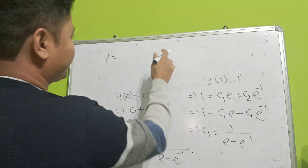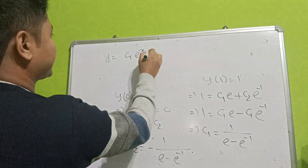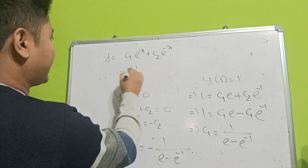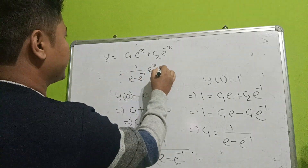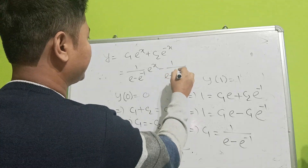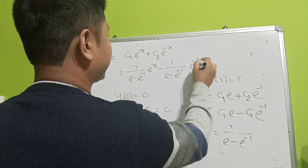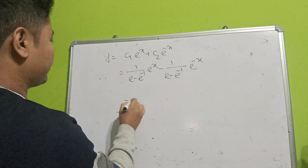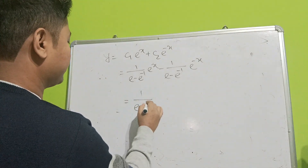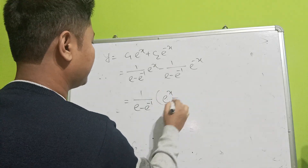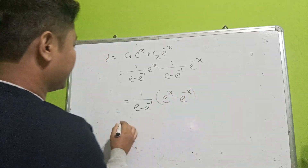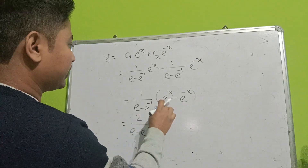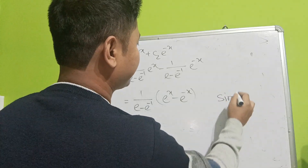So the general solution is y equals c1 e to the power x plus c2 e to the power minus x. Substituting the values of c1 and c2 and simplifying, we get y equals 1 by (e minus e to the power minus 1) times (e to the power x minus e to the power minus x), which simplifies using the hyperbolic sine identity.